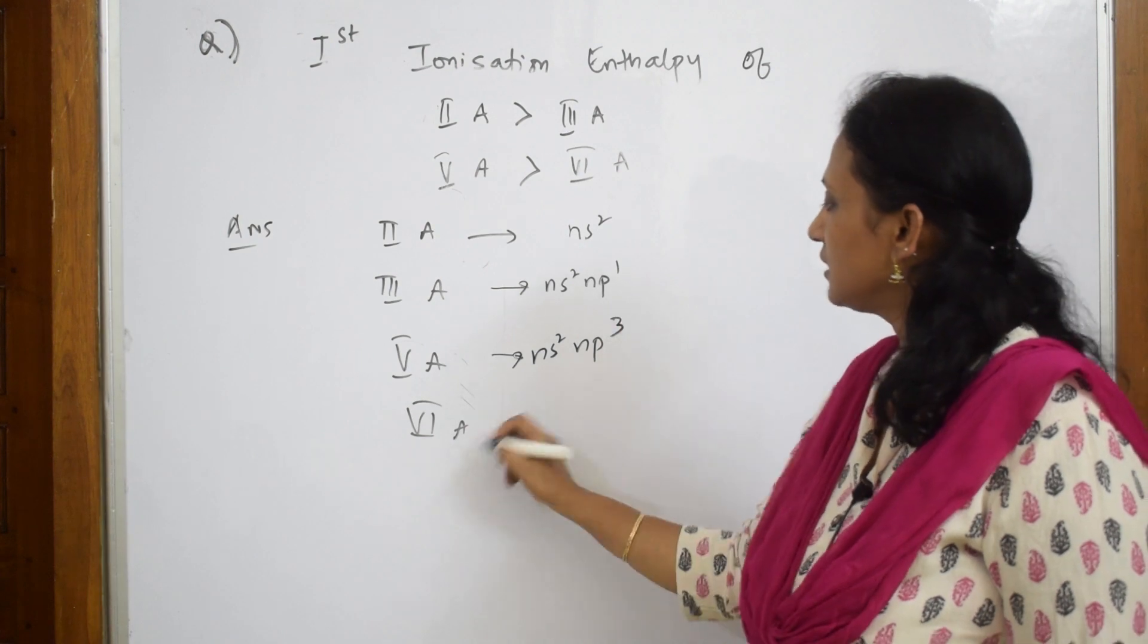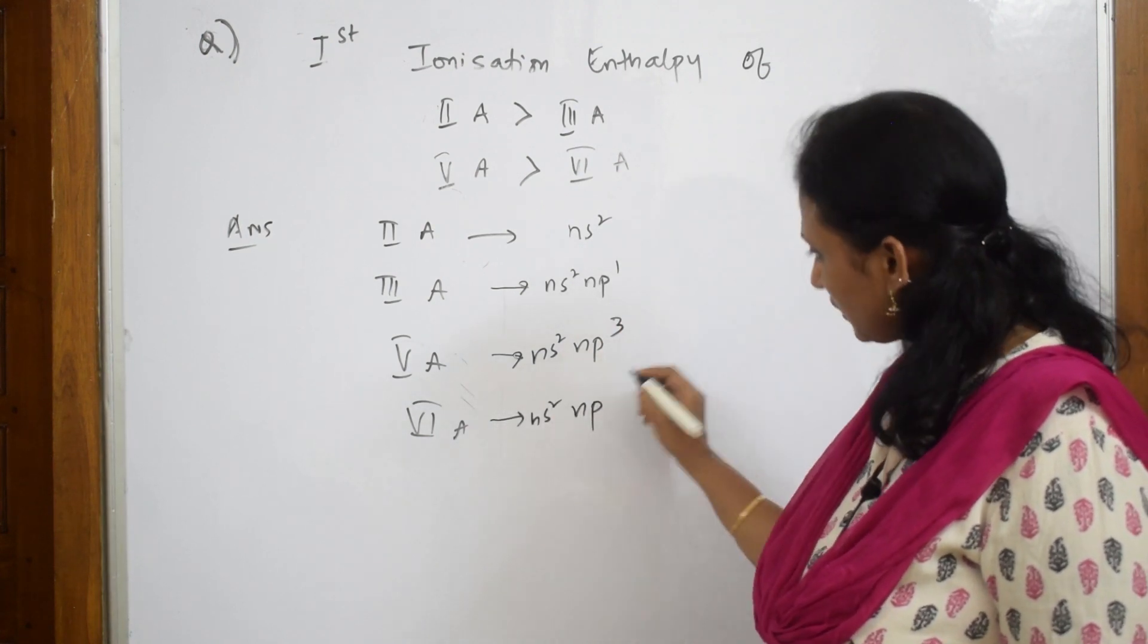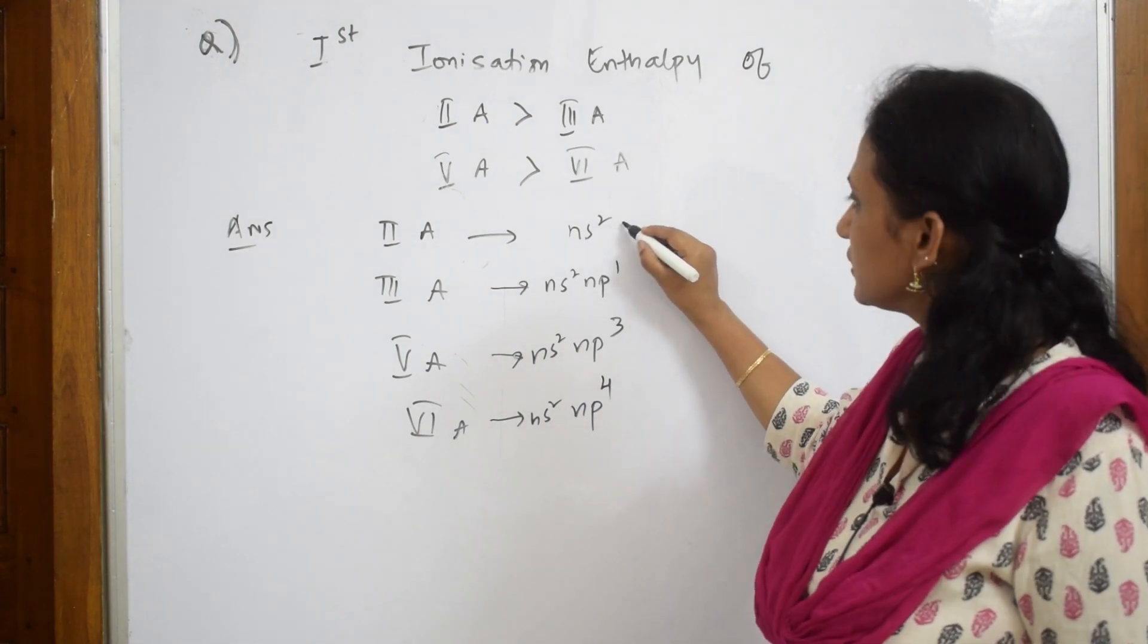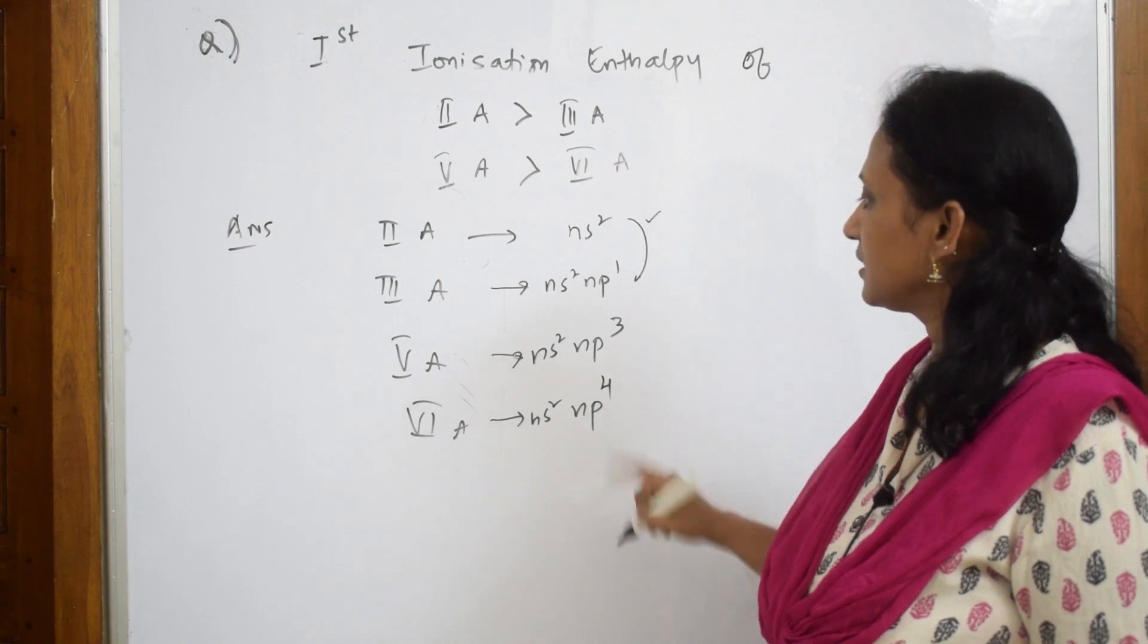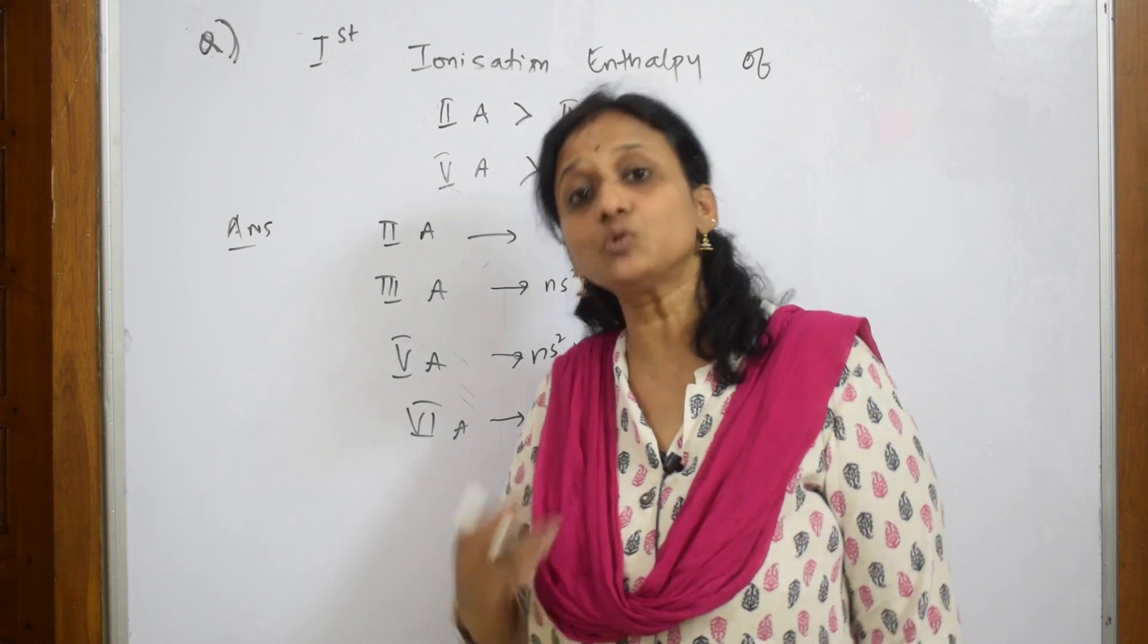6a configuration is ns2 and np4. Now here when I see ns2, they said this is greater than this. When I compare, they said this is greater, meaning more energy is required to remove an electron.